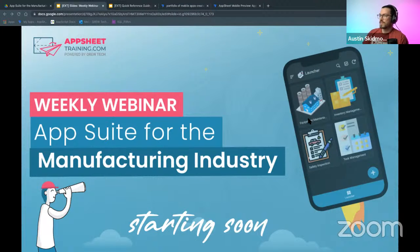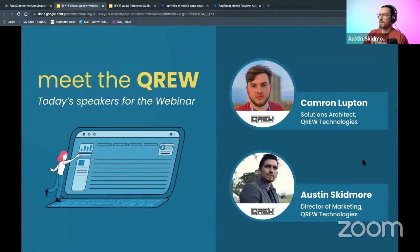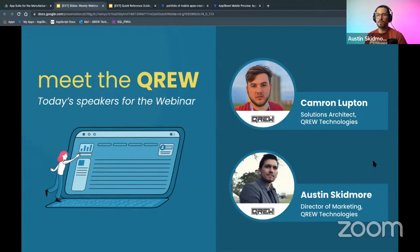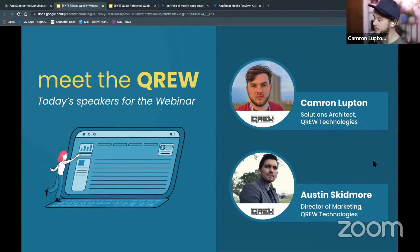Okay, it is 10 o'clock. Let's get started on our app suite for the manufacturing industry. I'm Austin from AppSheet Training, the director of marketing at Crew Technology — I handle all our marketing strategy and content. If you're interested in learning something new, you can email me at austin@crewtech.com and I can get it into our content strategy. And I'll let Cameron introduce himself. Hi, my name is Cameron Lupton. I'm a developer at Crew Technologies — it's been about four years.